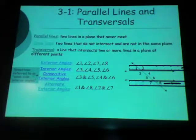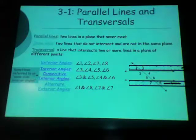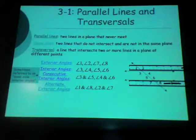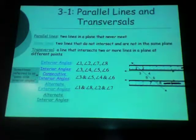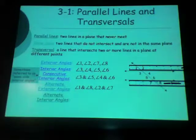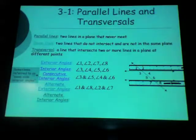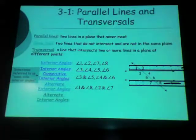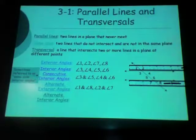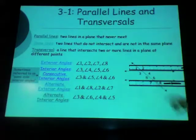You do have to recognize these types of angles because when we have parallel lines, they're going to have a special relationship. So the alternate interior angles would be three and six and four and five — on alternating sides of the transversal as well.